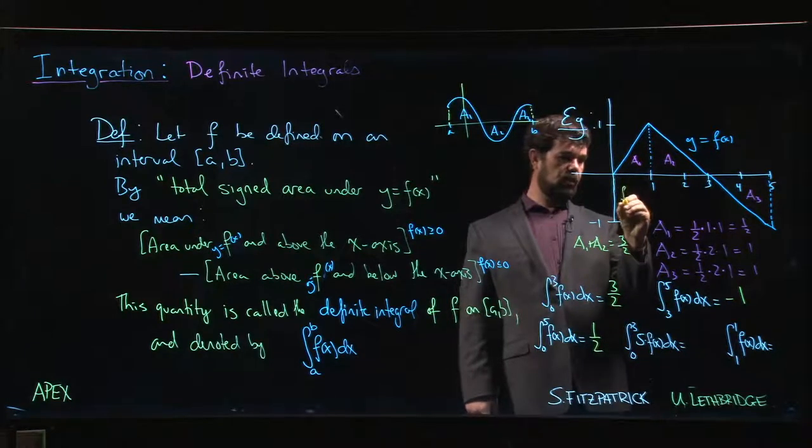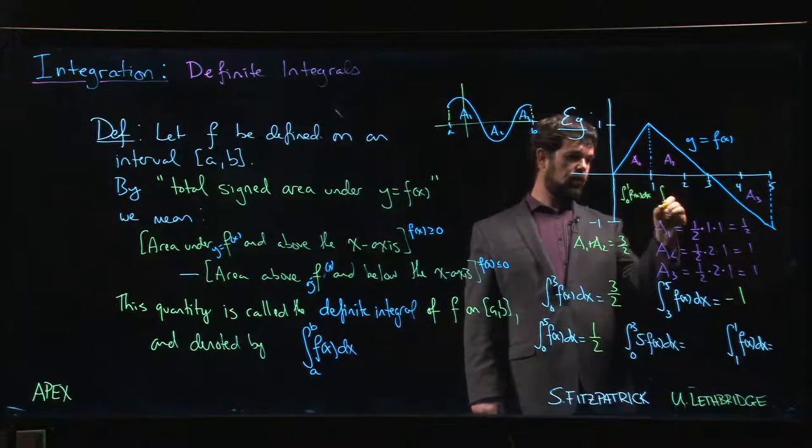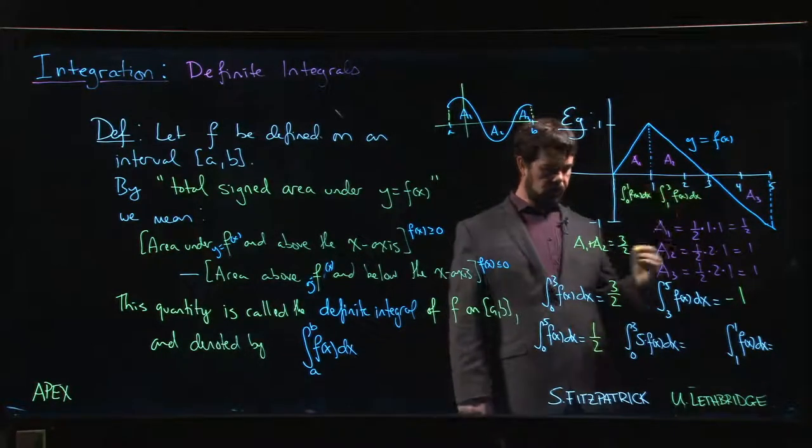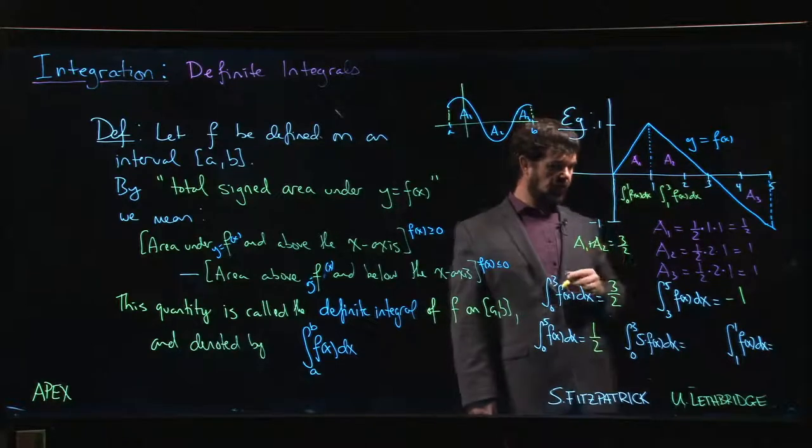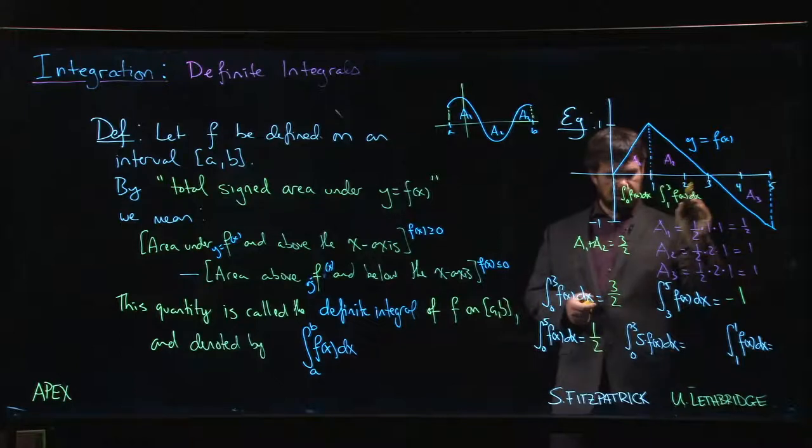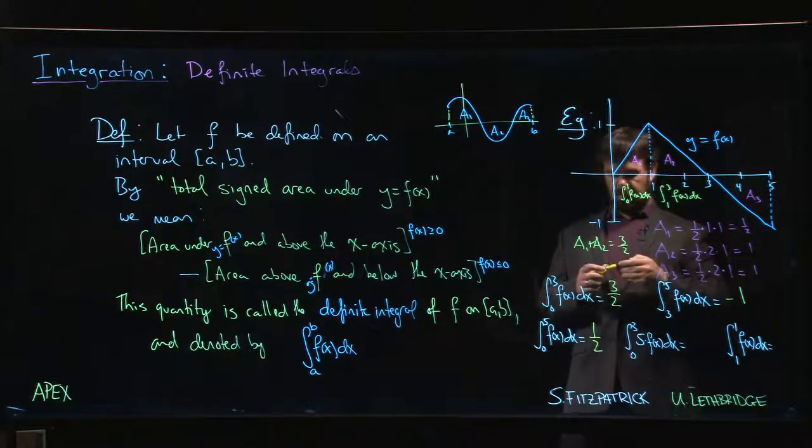this is the integral from 0 to 1 of f(x), and then this is the integral from 1 to 3 of f(x)dx. And if we add those two together, we get the total area from 0 to 3. Similarly, if we add these two together, the 3 over 2 added to minus 1, we get one half. We get the total area from 0 to 5.